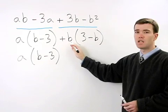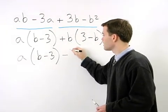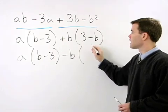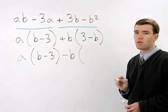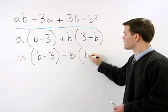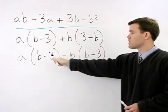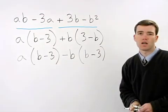the positive B in front of the parentheses becomes negative B and we can switch the order of 3 minus B to B minus 3 so it matches up with our other binomial.